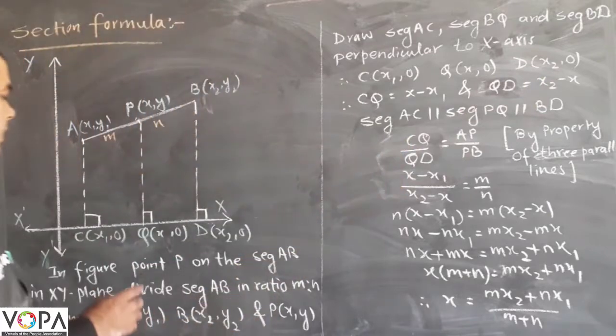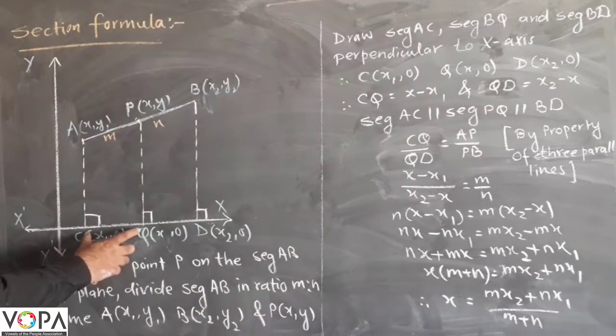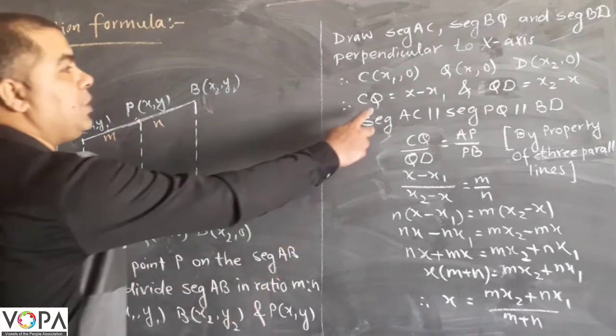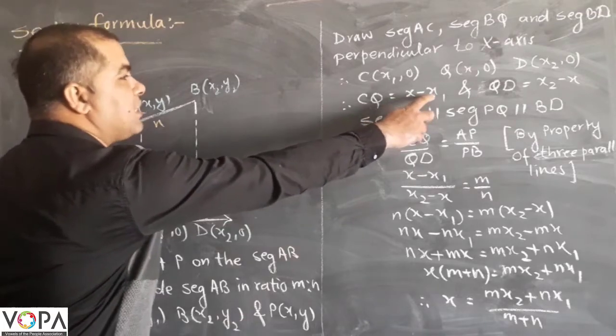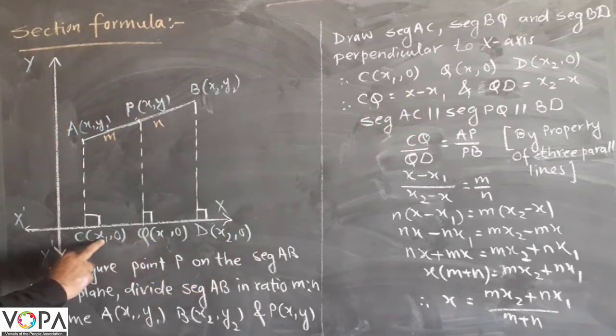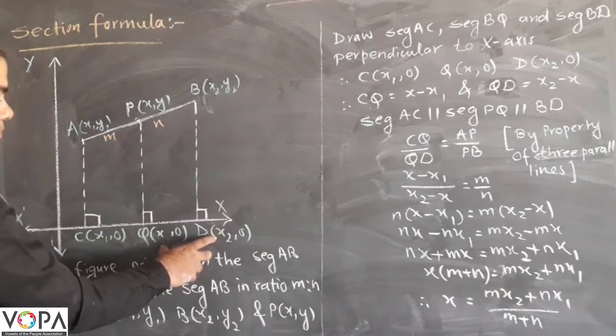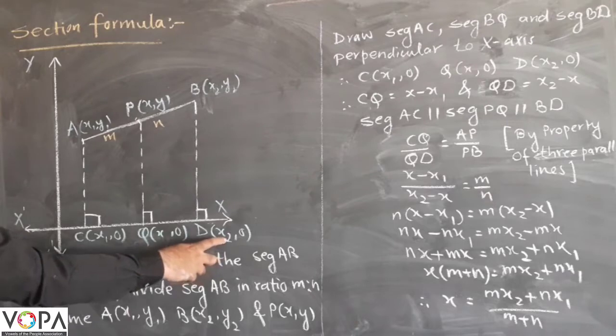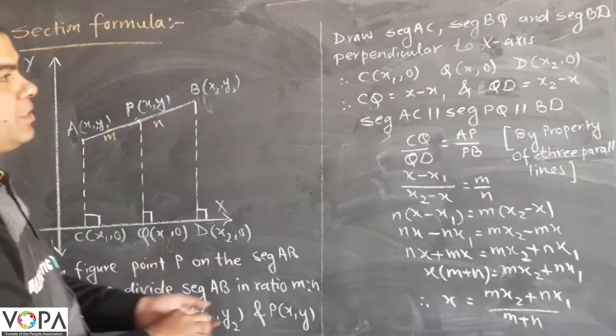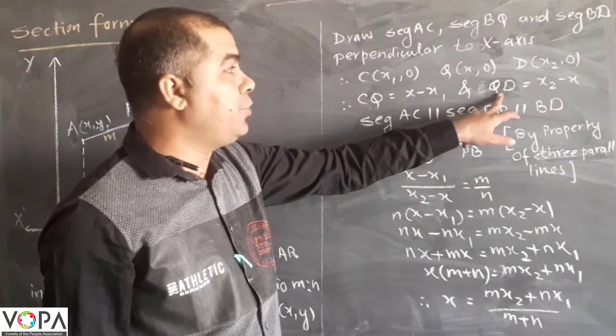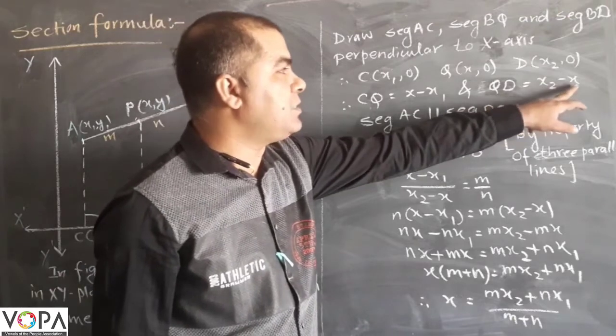Now what is the distance CQ? Using the distance formula, CQ is equal to X minus X1. And what is the distance DQ? X2 minus X. Here we have the QD distance X2 minus X.